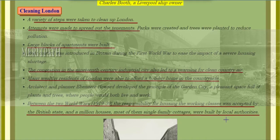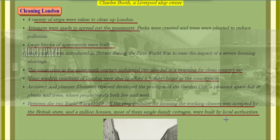A variety of steps were taken to clean up London. Attempts were made to spread out the tenements; parks were created and trees were planted to reduce pollution; large blocks of apartments were built. Rent control was introduced in Britain during the First World War to ease the impact of a severe housing shortage. The congestion of the 19th-century industrial city led to a yearning for clean country air. Architect and planner Ebenezer Howard developed the principle of the Garden City — a pleasant space full of plants and trees where people would both live and work.